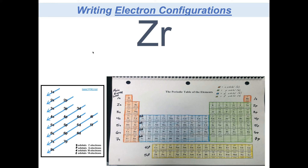There are a few different options on how to approach this. Ultimately, I want to get the electron configuration for zirconium. The first thing you do is find it on the periodic table — it's right here, so X marks the spot. There's zirconium; that's what we need to show the configuration for.